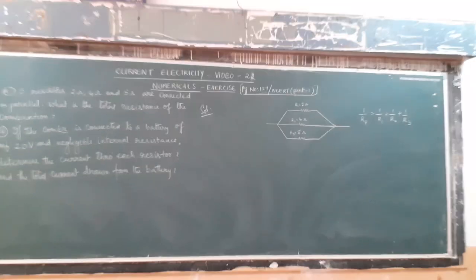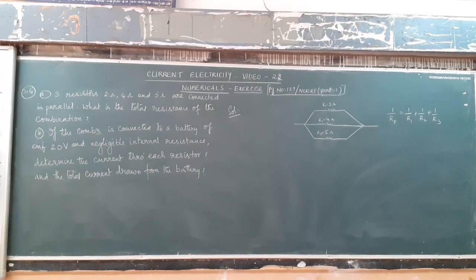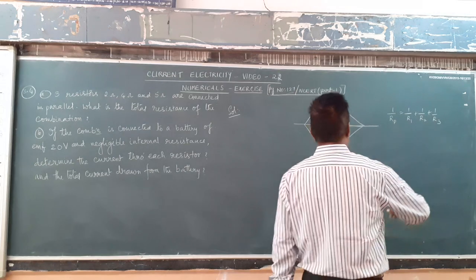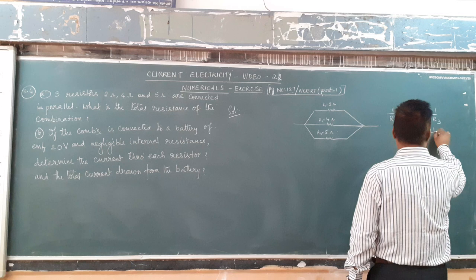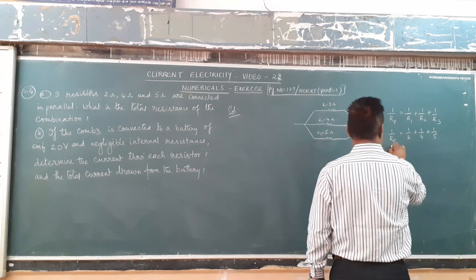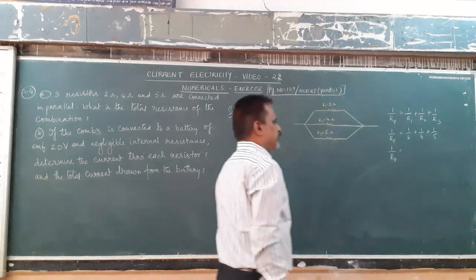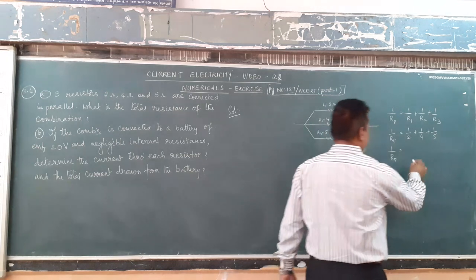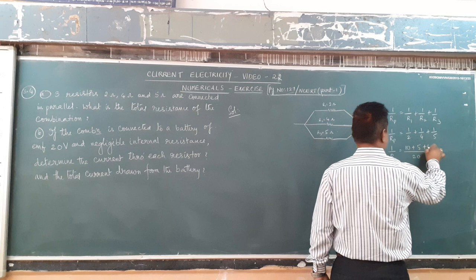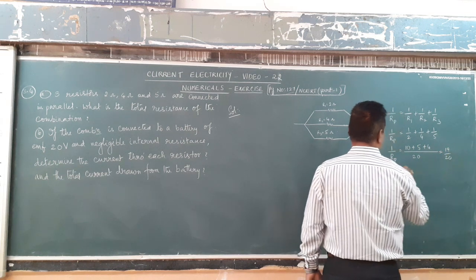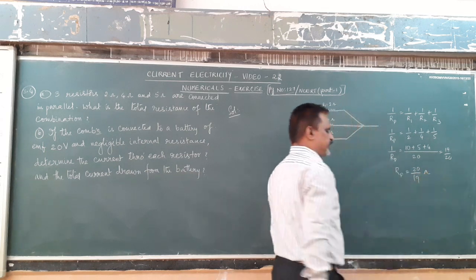Just we substitute the values of R1, R2, and R3. The value of R1 is 2, R2 is 4, and R3 is 5. Taking LCM of 2, 4, and 5, the LCM is 20. So we get 10, 5, and 4 in the numerator, giving us 19/20. Therefore, the effective resistance of the combination is 20/19 ohms.